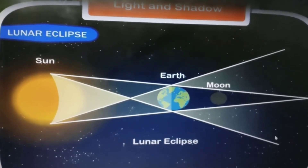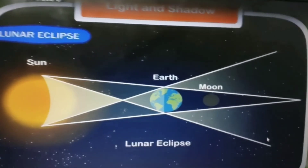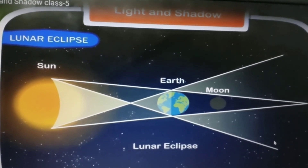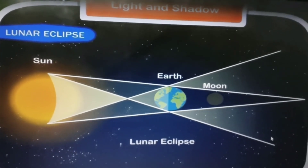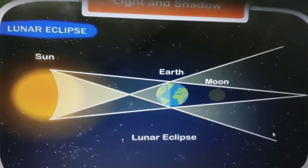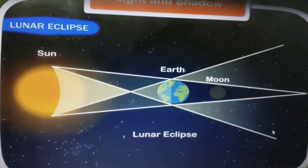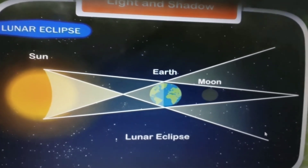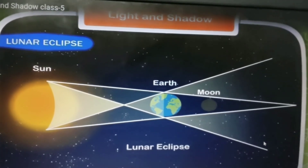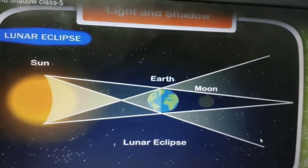To summarize: solar eclipse occurs when the moon comes between the sun and the earth, and lunar eclipse occurs when the earth comes between the sun and the moon. Solar eclipse occurs on new moon day and lunar eclipse occurs on full moon night. These two diagrams are very important and we will practice drawing them in the next class. Thank you and have a nice day.